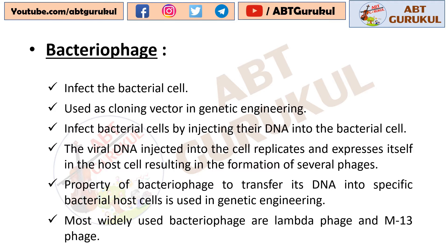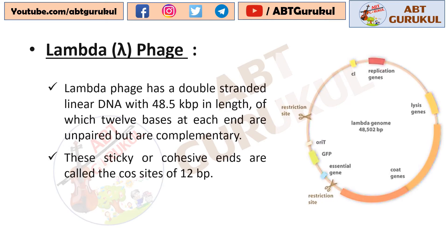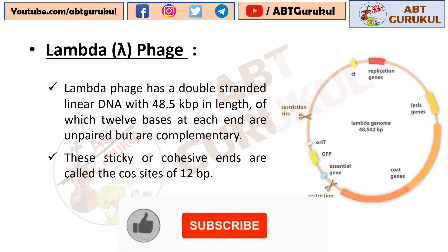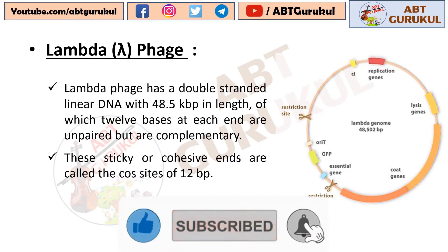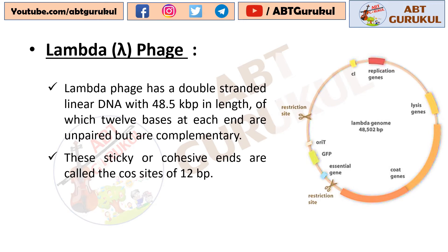Most widely used Bacteriophages are Lambda Phage and M13 Phage. Lambda Phage has a double stranded linear DNA with 48.5 kilobase pairs in length, of which 12 bases at each end are unpaired but are complementary. These sticky or cohesive ends are called the cos site — that is, cohesive end sites — of 12 base pairs.